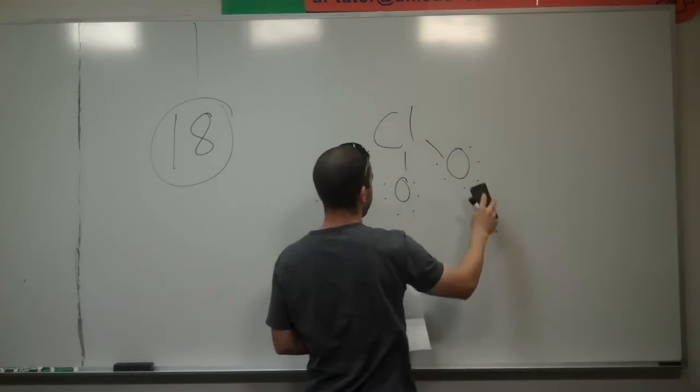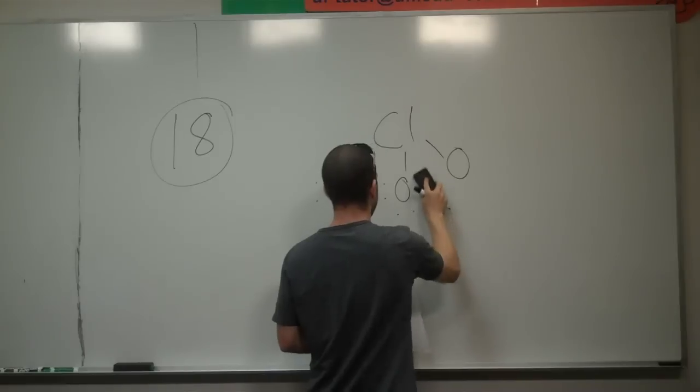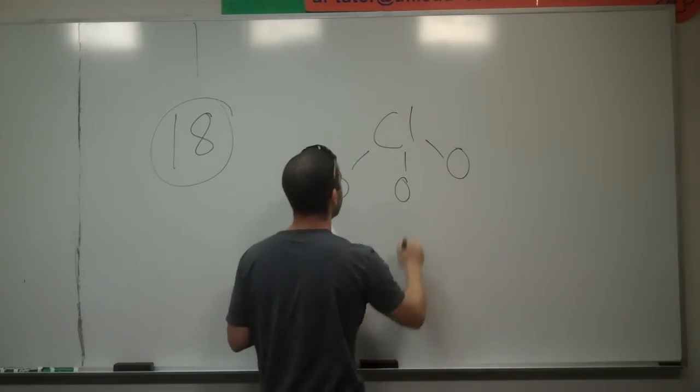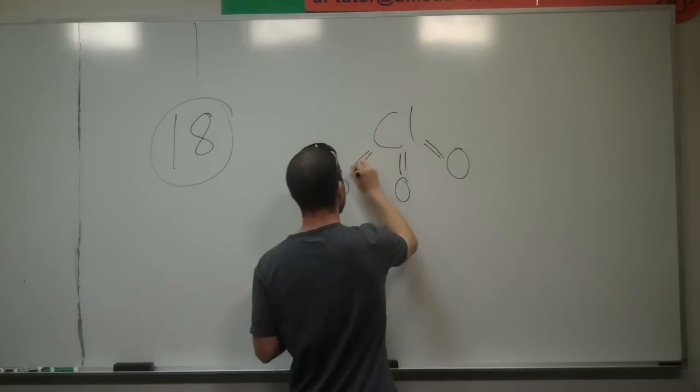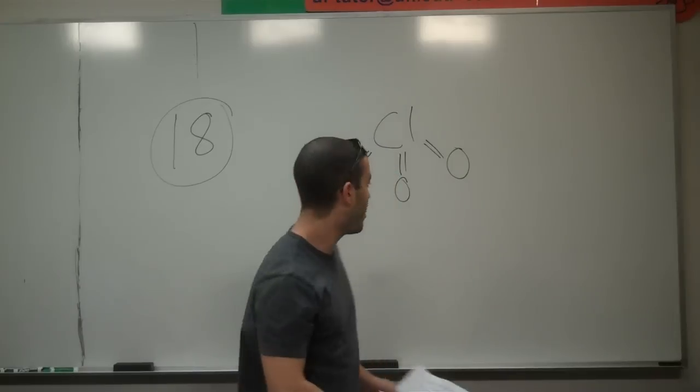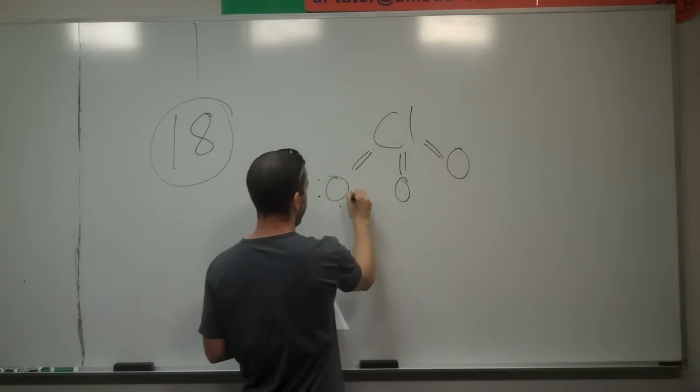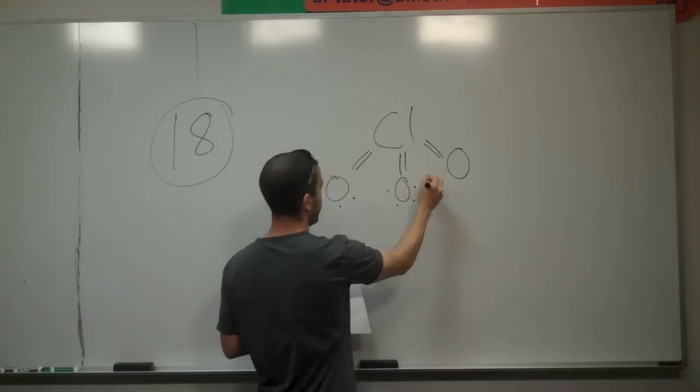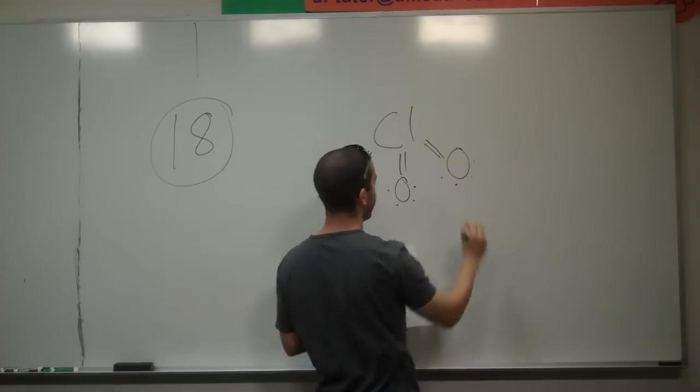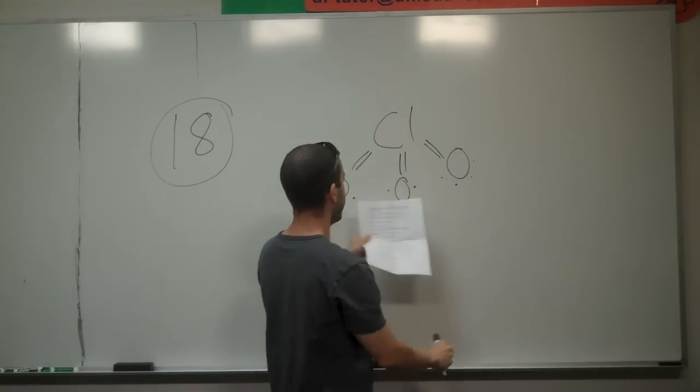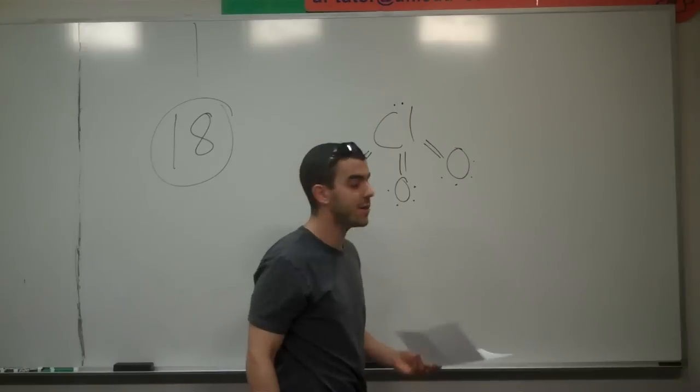So, let's try the opposite. Let's put double bonds on all of our oxygens and see what we can do from there. So, in this case, we have three bonds. These are all going to have two lone pairs, which makes them neutral when we calculate our formal charge. But now our chlorine doesn't have enough electrons. It's only got six. So, if we put a lone pair on it, now it's got eight.